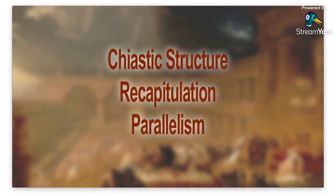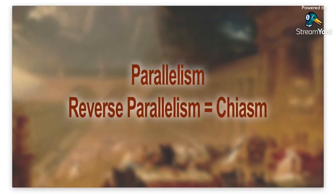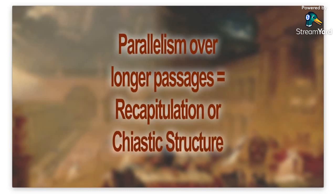What is chiastic structure? What is recapitulation, and what is parallelism? Parallelism is when a structure is repeated — not simply repeating words, but repeating the structure of the words. There's a famous phrase from the Gettysburg Address: 'government of the people, by the people, for the people.' Notice that's a parallelism — similar words are repeated. A reverse parallelism is when you repeat something in the reverse order; it's also called a chiasm. A parallelism over longer passages is called recapitulation, and if it's a reverse parallelism over a longer passage, it's called chiastic structure.